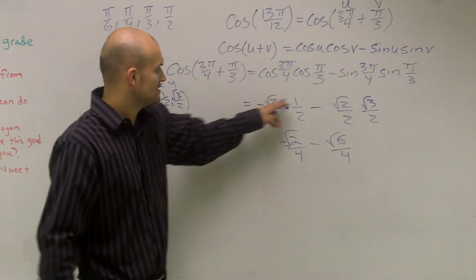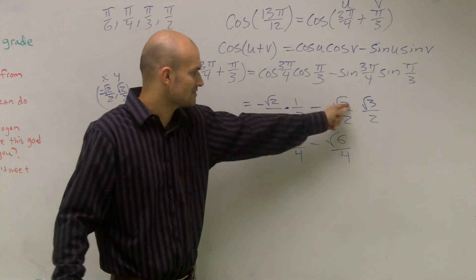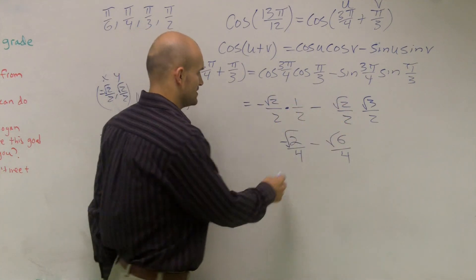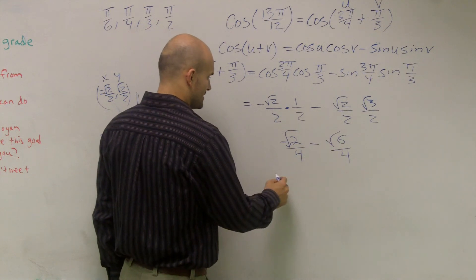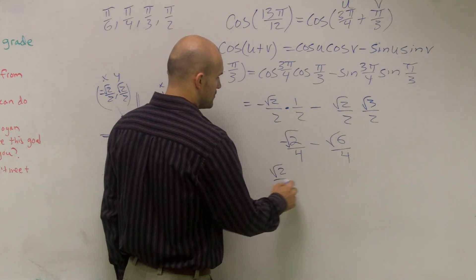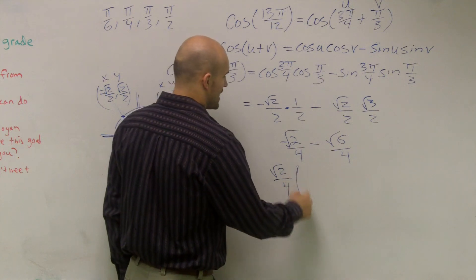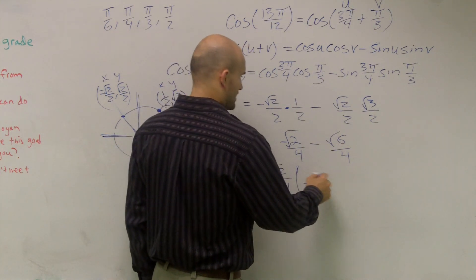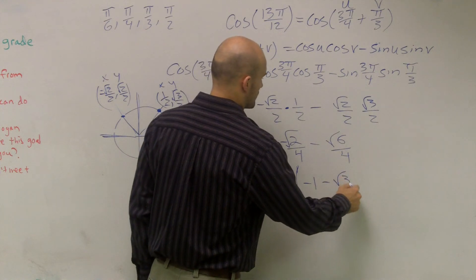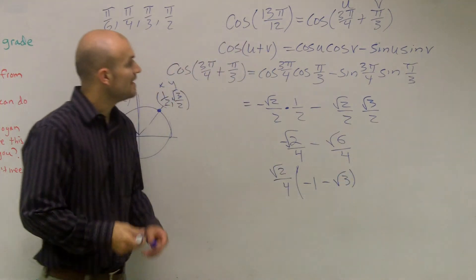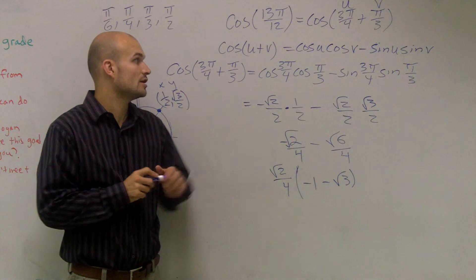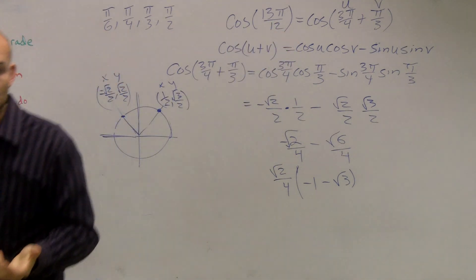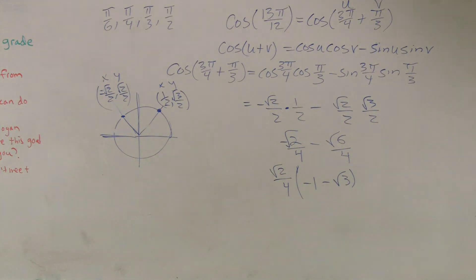And one thing you notice, you can even see it up here, is I can factor out a √2 and also take out a 4 out of each of these. So I can really get √2/4, I can factor that out, and what I'm left with is negative 1, negative 1 minus √3. And that's how you find the cosine of the addition of those two angles to give you 13π over 12. Wonderful.